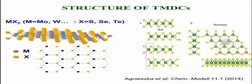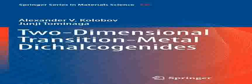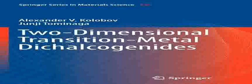One of the most significant properties of TMDs is their varied electronic behavior, which can range from metallic to semiconducting, depending on the specific compound and its structure. For example, molybdenum disulfide, MoS2, is a widely studied TMD with semiconducting properties.